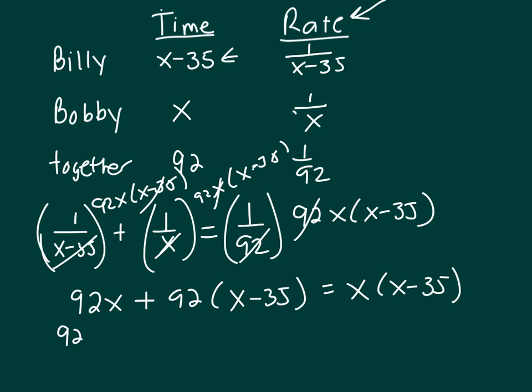So this is 92X plus 92X minus, what is 92 times 35? 92 times 35, I'm using my calculator. That's 3,220 equals X squared minus 35X.